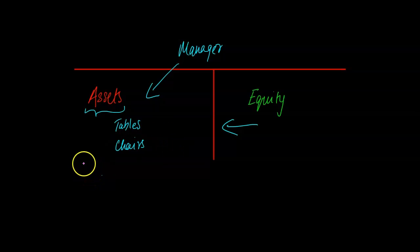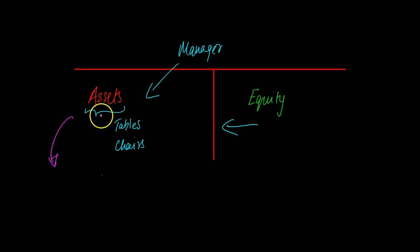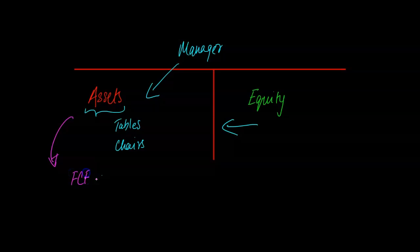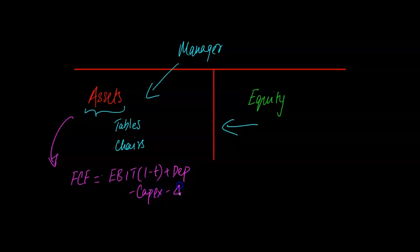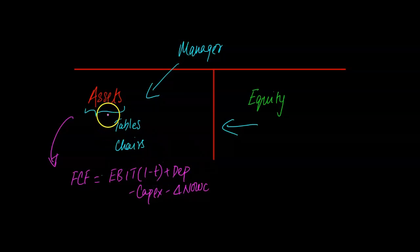At any given point in time, if somebody asks what cash flows are being produced — or expected to be produced — by these assets, financial cash flows or free cash flows are calculated as earnings before interest and taxes multiplied by (1 minus the tax rate), plus depreciation, minus any capital expenditures, and minus any changes in net operating working capital.